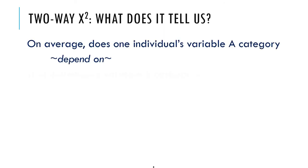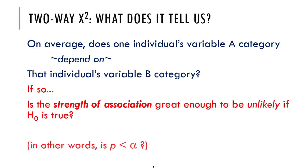Remembering that the two-way chi-square tells us about strength of association. More than that, it tells us whether the strength of association is strong enough that it would be unlikely if the null hypothesis were true. It's going to give us a p-value.